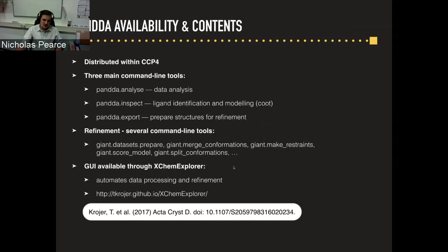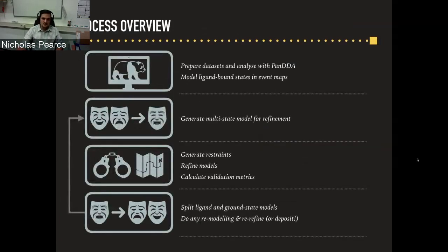The PANDA process: prepare the data, analyze it, do all the modeling, then come out of PANDA. Generate models for refinement — which are superpositions between the ligand and the unbound state — generate some restraints, refine them, then look at validation. For remodeling, you split the ligand and ground states back into two individual structures, do any remodeling, merge them again, and re-refine. Or if you're lucky, you can just deposit. PANDA Analyze input is pairs of PDBs and MTZs — multiple crystal structures of the same crystal form, all in the same space group. Every MTZ needs a complete set of reflections, for instance using Uniqueify, to prevent issues when subtracting Fourier series with missing reflections.